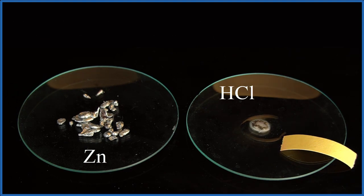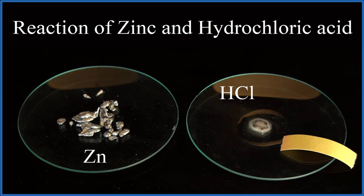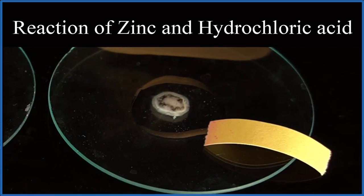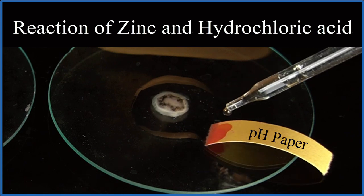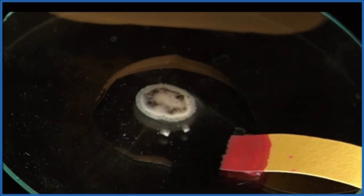So I have zinc metal, I got this from pennies here in the US, and we put hydrochloric acid, concentrated hydrochloric acid on it, and you see right away we get those bubbles. That's hydrogen gas.